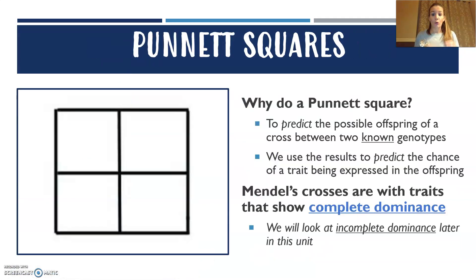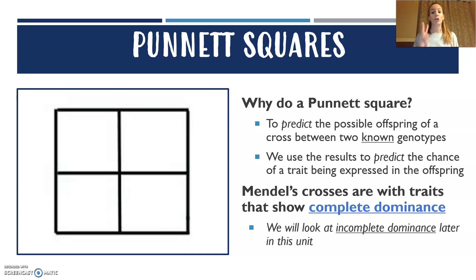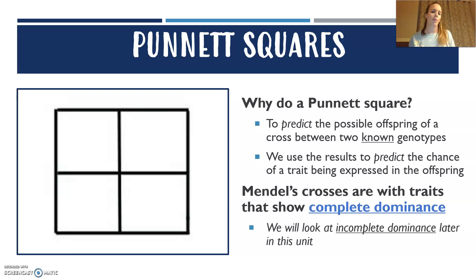Lastly, a quick refresher on Punnett squares. We're going to do lots of these, including the big ones with 16 boxes instead of just four. A simple Punnett square is how you predict the possible offspring of a cross, but the catch is it has to be between two known genotypes. Sometimes you might be given the offspring and have to work backwards to figure out the parent, but usually you're using Punnett squares on two known parents.